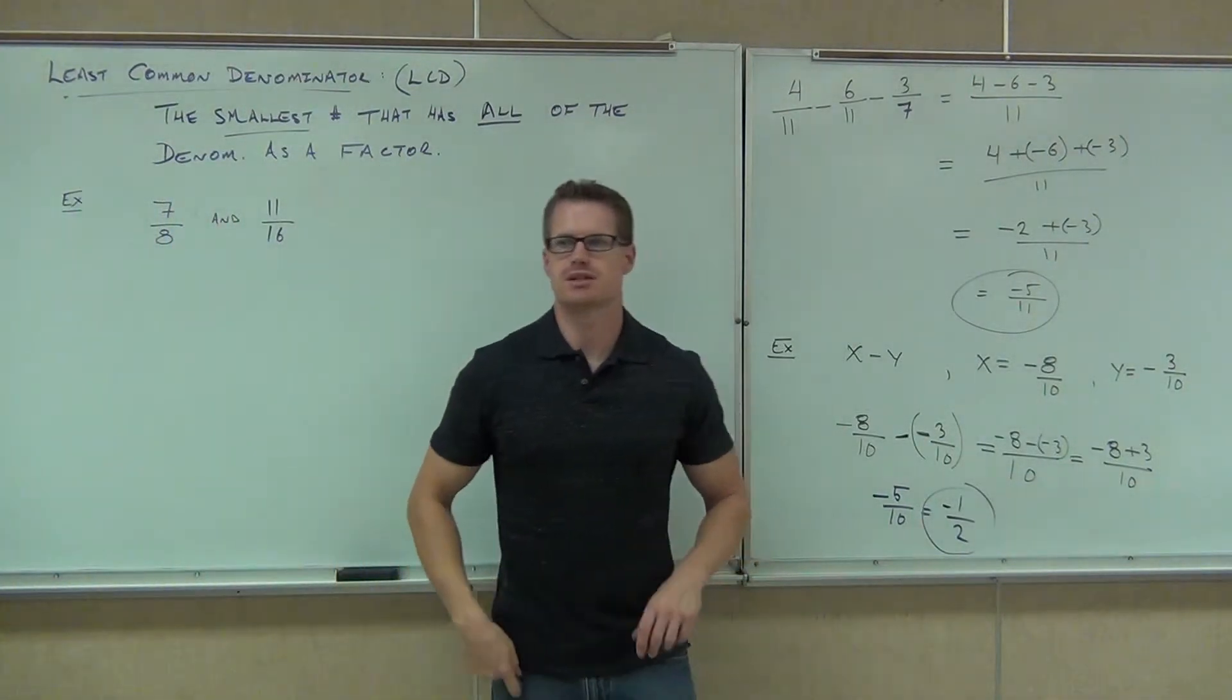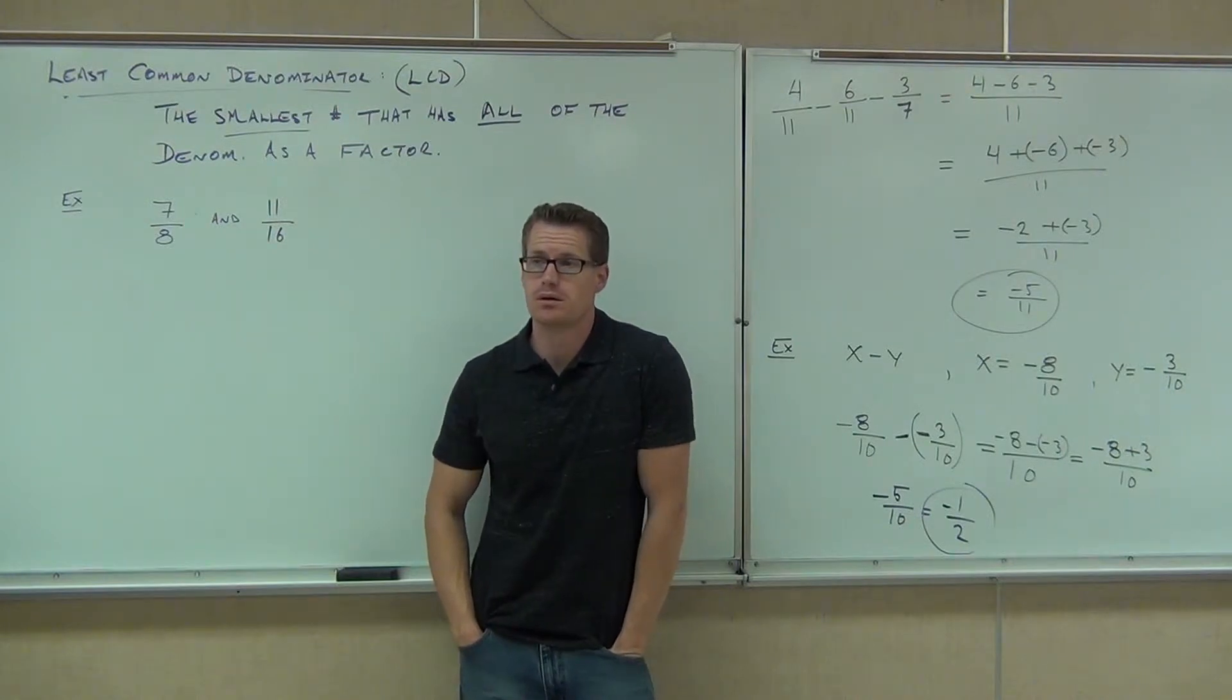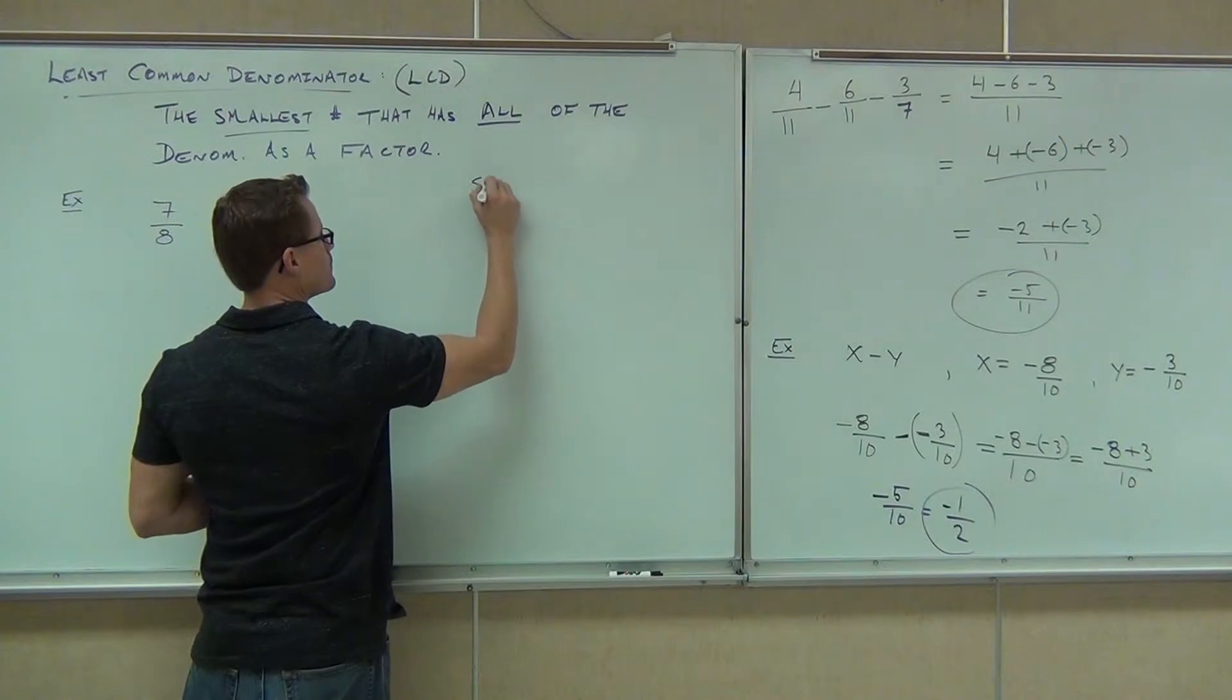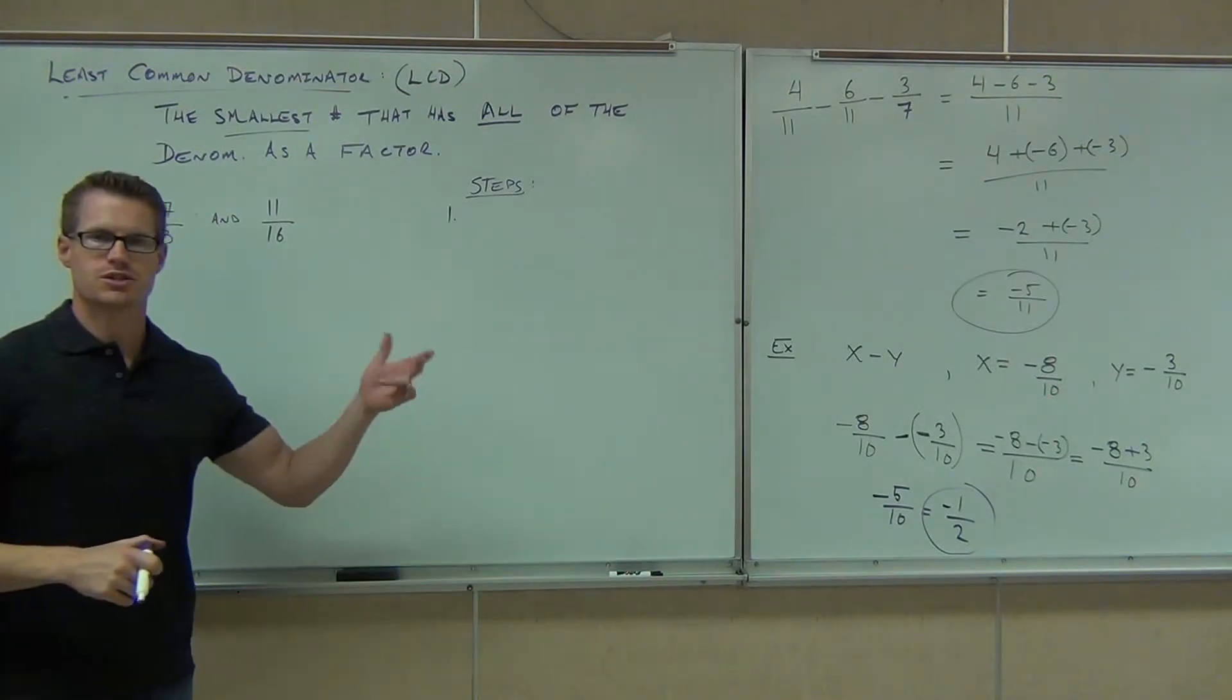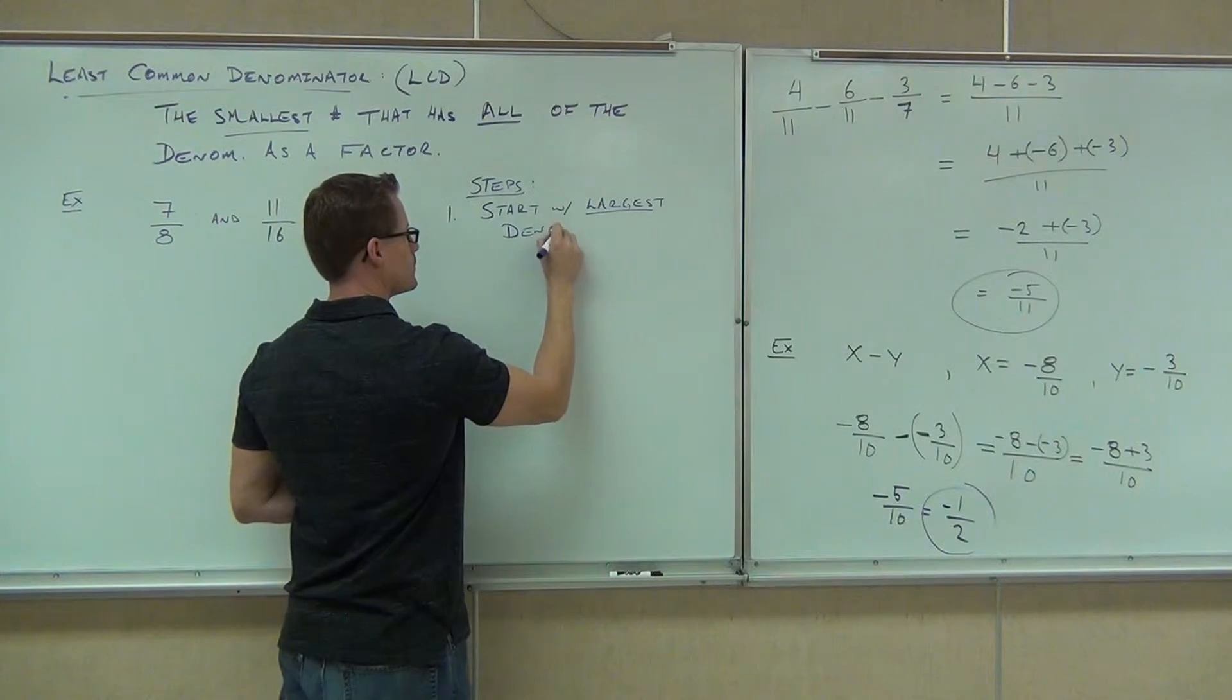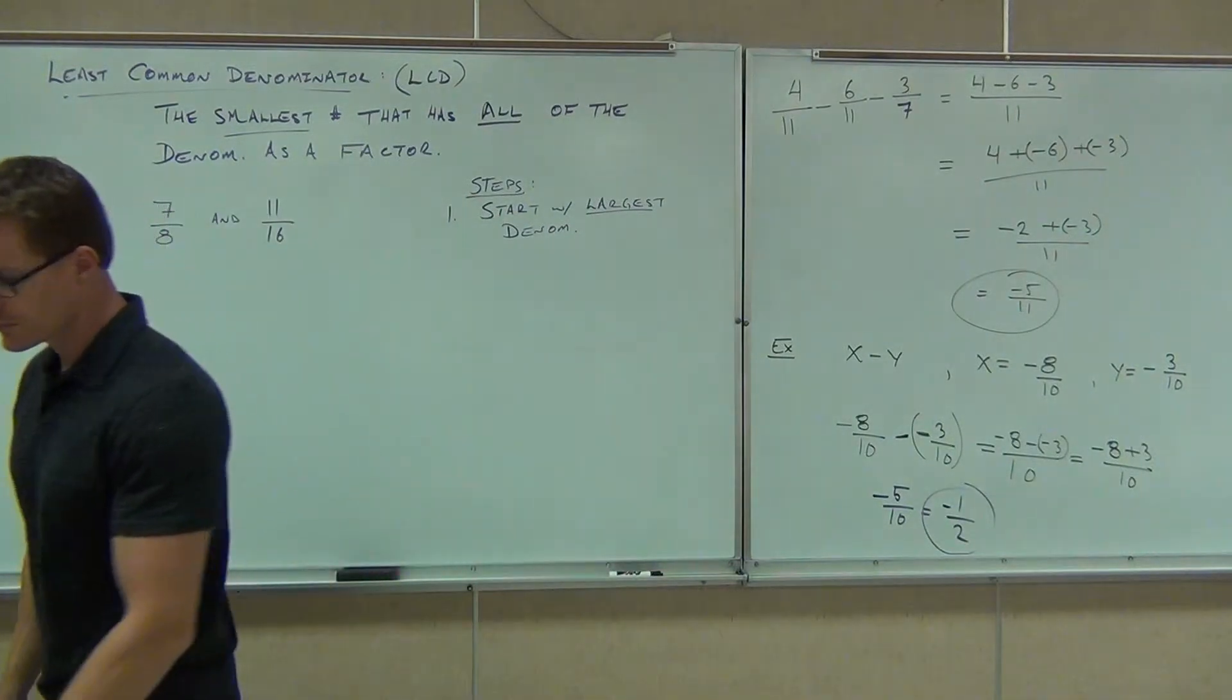Let's look at 7 eighths and 11 sixteenths. Now, I'm not looking to add or subtract those. I'm just looking at the fractions, okay? Firstly, would you be able to add or subtract those the way they are right now? So we look at that and go, okay, we've got 8, we've got 16, it's not the same. I can't add them, I can't subtract them. What we're looking for is how to find the common denominator. Now, here's how we do it. I'm going to give you some steps to do this. The first steps you're going to do, you're going to identify the largest denominator. I want to tell you there's other methods to do this. This one's the fastest. It works for numbers that are relatively small.